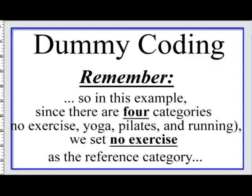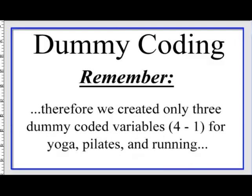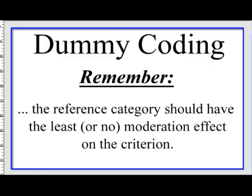In our example, we're going to make three dummy codings because we've got four categories. The four categories are the types of exercise: one is the control group with no exercise, the other one is yoga, pilates, and running. We're going to set the no exercise group as the control group or reference category. We only make three dummy coded variables — one for yoga, one for pilates, one for running. All inferences from this data will be referring back to the control group, or those that don't exercise.